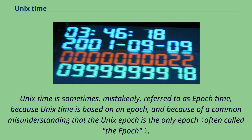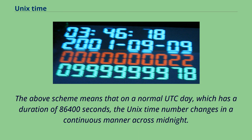Unix time is sometimes, mistakenly, referred to as epoch time, because Unix time is based on an epoch, and because of a common misunderstanding that the Unix epoch is the only epoch. On a normal UTC day, which has a duration of 86,400 seconds, the Unix time number changes in a continuous manner across midnight.